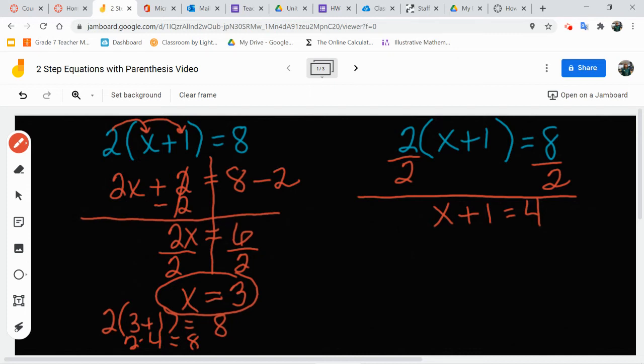I do the opposite of what I see on this side. Sometimes you might have more than one step, and we will look at that in a second. I have x plus 1 equals 4. The opposite of adding 1 is subtracting 1 to both sides, leaving me with x equals 3 again. And that is my answer, and we're good to go.